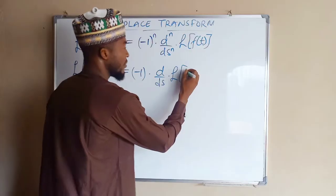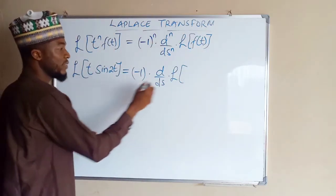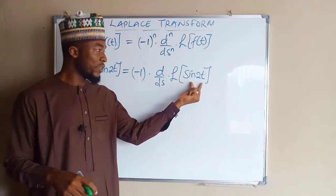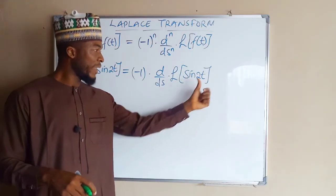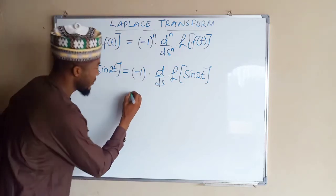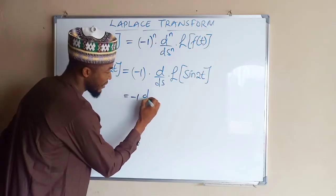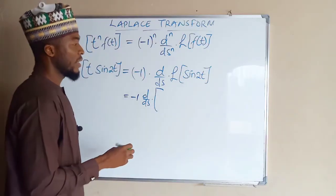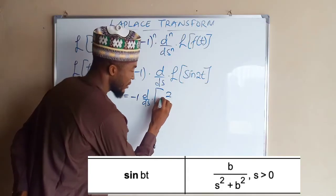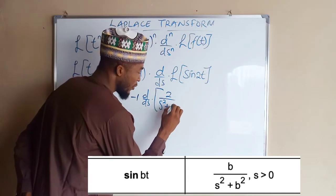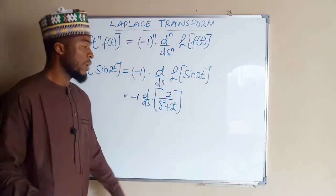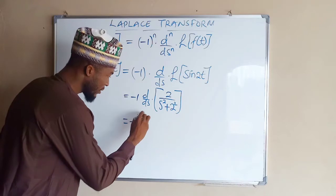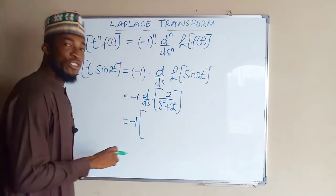We need the derivative of the Laplace transform of the function of t, which is sine 2t. First of all we are going to find the Laplace transform of sine 2t, then take the first derivative of the result, then multiply by negative 1. This equals negative 1 times d/ds of the Laplace transform of sine 2t, which is 2 divided by s squared plus 2 squared.